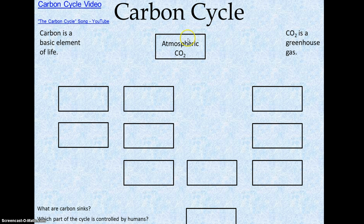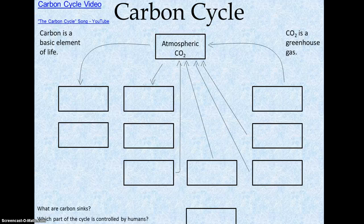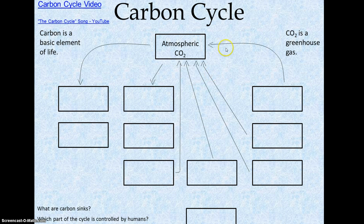So we're going to start with the atmosphere. That's where carbon dioxide is. It makes up very little of the atmosphere — 0.03%. There are two ways that carbon comes out of the atmosphere, and there are five ways that it goes in. So keep that in mind. Two ways go out, five go in.